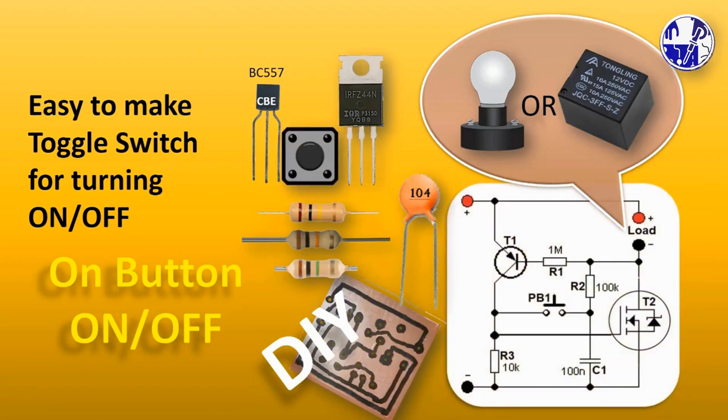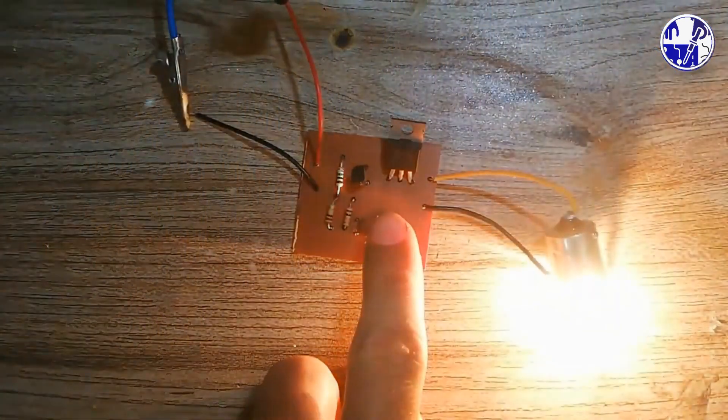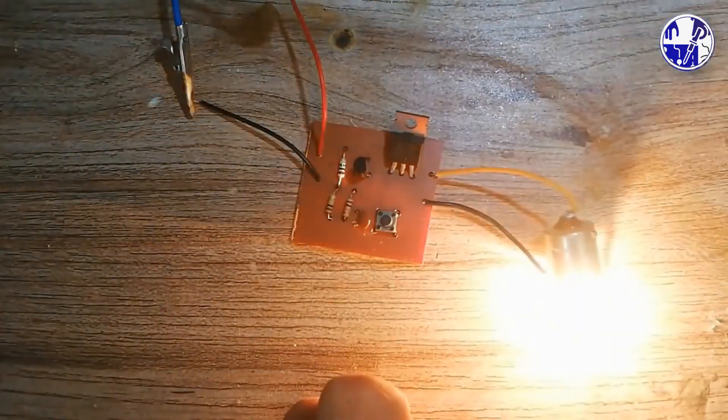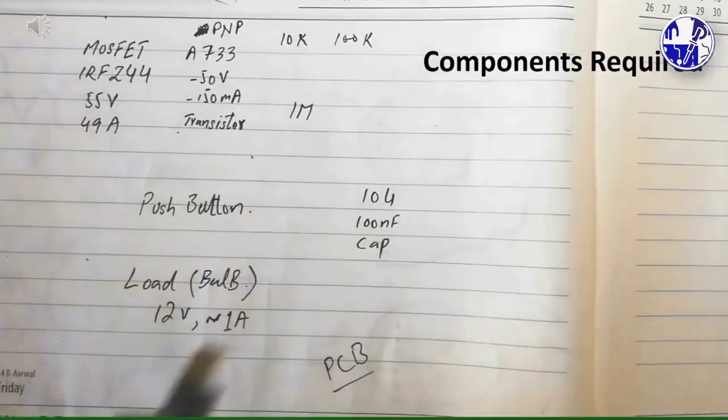In this video, you'll learn how to build a simple on-off toggle switch circuit using readily available components. This on-off toggle switch circuit is energy efficient, easy to build, and perfect for battery-powered applications.